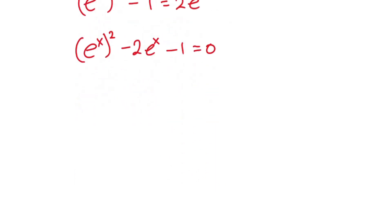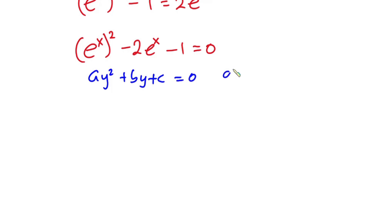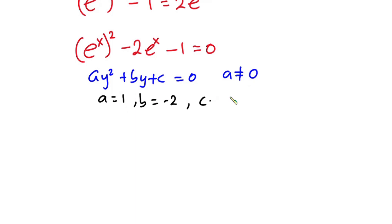Now you can see we have a quadratic equation of the form ay squared plus by plus c is equal to zero, where a is never equal to zero. Comparing the coefficients, a is equal to 1, b is equal to negative 2, c is equal to negative 1, and y is equal to e to the power x.